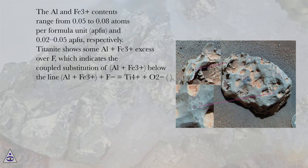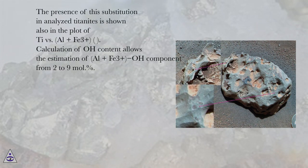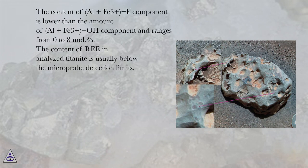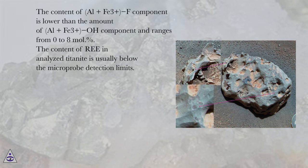Titanite shows some Al+Fe3+ excess over F, which indicates the coupled substitution of (Al+Fe3+) + F⁻ = Ti4+ + O2⁻. The presence of this substitution in analyzed titanites is shown also in the plot of Ti versus Al+Fe3+. Calculation of O content allows the estimation of Al+Fe3+−O component from 2 to 9 mole percent. The Al+Fe3+−F component is lower than the Al+Fe3+−O component and ranges from 0 to 8 mole percent. The content of REE in analyzed titanite is usually below the microprobe detection limits.